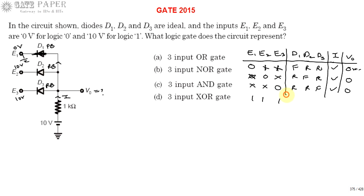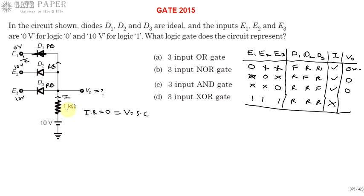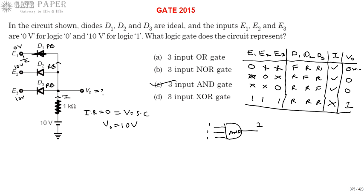The only case where you get a high output is when all inputs are at logic 1. If all inputs are at logic 1, all three diodes are under reverse bias. When all three are reverse biased, no current flows, so no voltage drop takes place across the resistor — V_R = 0. With zero voltage drop, the resistor acts like a wire, and the 10 volts directly appears at the V0 node. So V0 = 10 volts, which is logic 1. Therefore, if any input is 0 the output is 0, and only when all inputs are logic 1 is the output 1. This is nothing but a three-input AND gate. The circuit works as a three-input AND gate. Thank you.